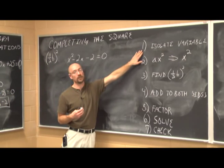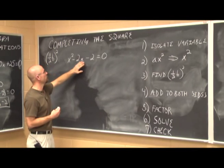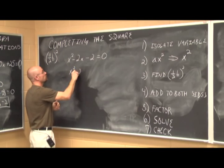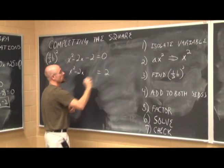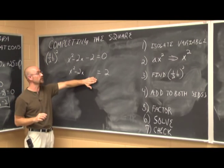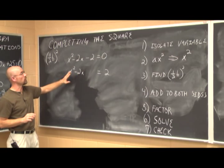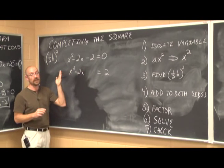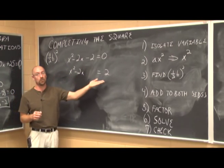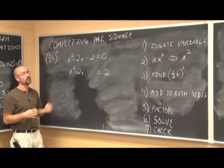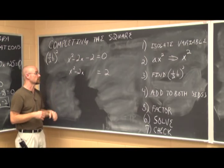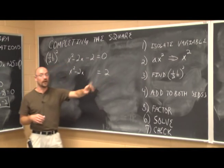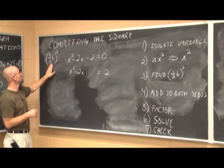The first thing we do is isolate the variables by adding 2 to both sides: x squared minus 2x, leaving space for the next step. We need the coefficient in front of x squared to be 1. In this case it's already 1, so we can skip dividing through. Next, find one half of b squared. My b value is negative 2, so half of negative 2 is negative 1, and negative 1 squared is positive 1.